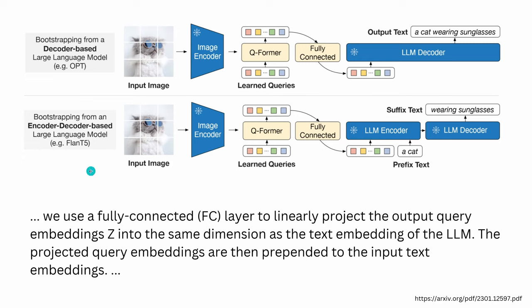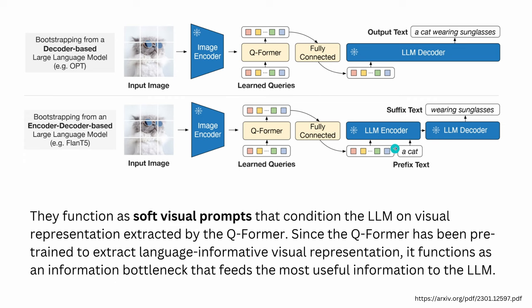Using Flan-T5 as the second option: the input image goes through the frozen image encoder, then through the Q-Former. The output query embeddings pass through a fully connected layer to linearly project them into the same dimension as the text embeddings for the LLM. This functions as a soft visual prompt. If using a decoder-only model it goes directly; for an encoder-decoder stack you project into the encoder. Then next-word generation — the generative AI — takes place.